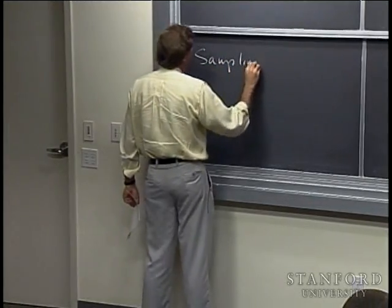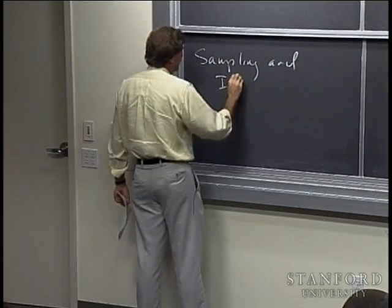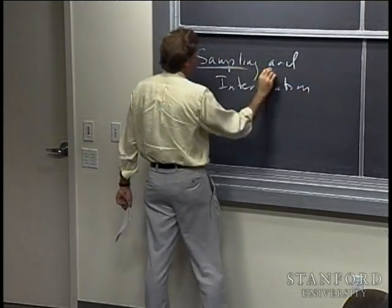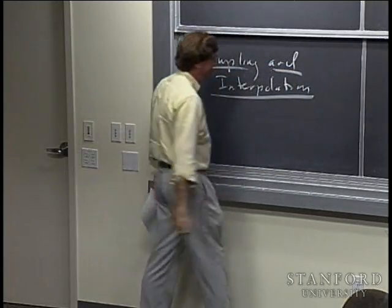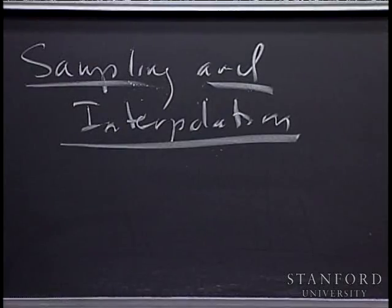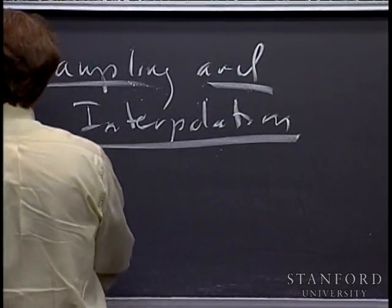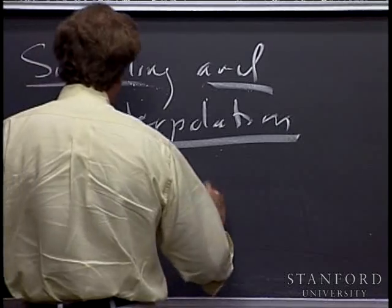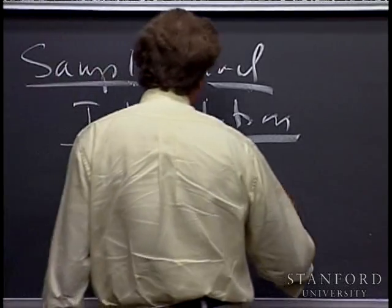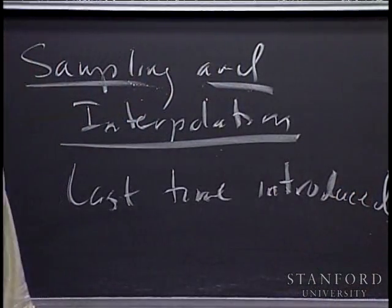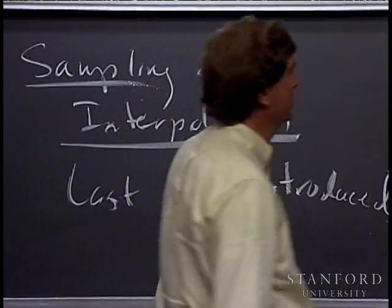There's a lot to say, and we can't say it all. I want to get the main ideas across and the main phenomena that are associated with it. Our approach is going to be an application of what we talked about last time with the Shah function. We introduced this train of delta functions, sometimes called the Dirac comb, Dirac train, pulse train, or impulse train.